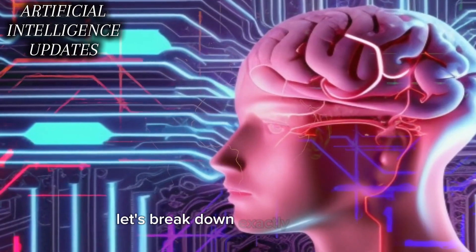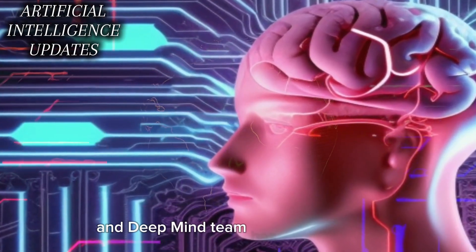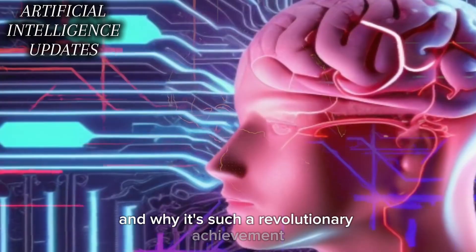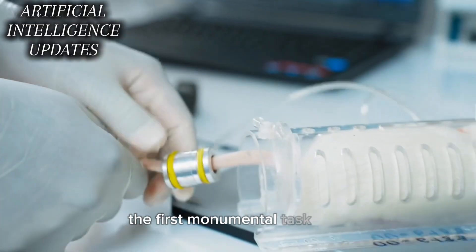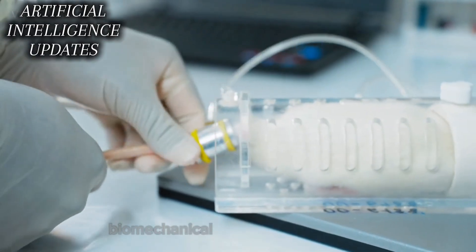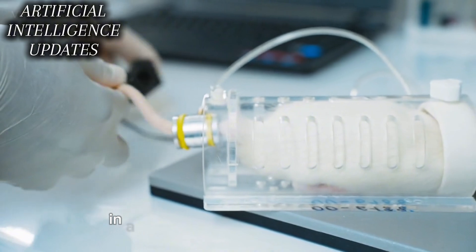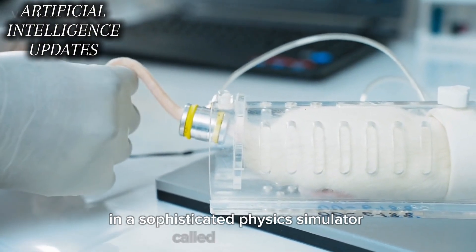Let's break down exactly what the Harvard and DeepMind team has accomplished and why it's such a revolutionary achievement. The first monumental task was constructing an accurate biomechanical model of a rat's body in a sophisticated physics simulator called MuJoCo.